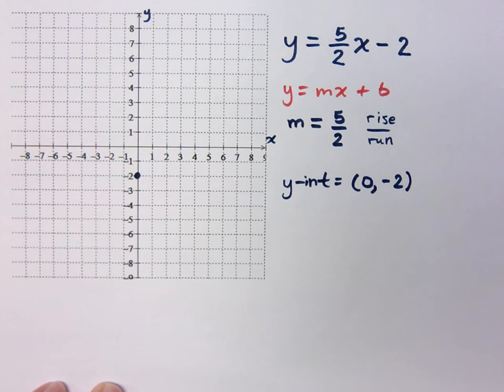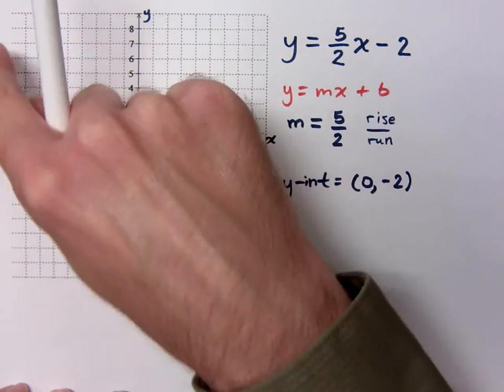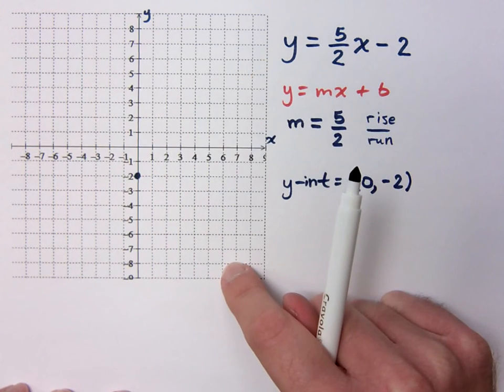Then I've got my slope of 5 halves. Is that positive or negative? Positive. That means from left to right, what will my line be doing? Increasing. It should be going up. So if you're drawing it and it's going down, it's decreasing, then you're messing up.